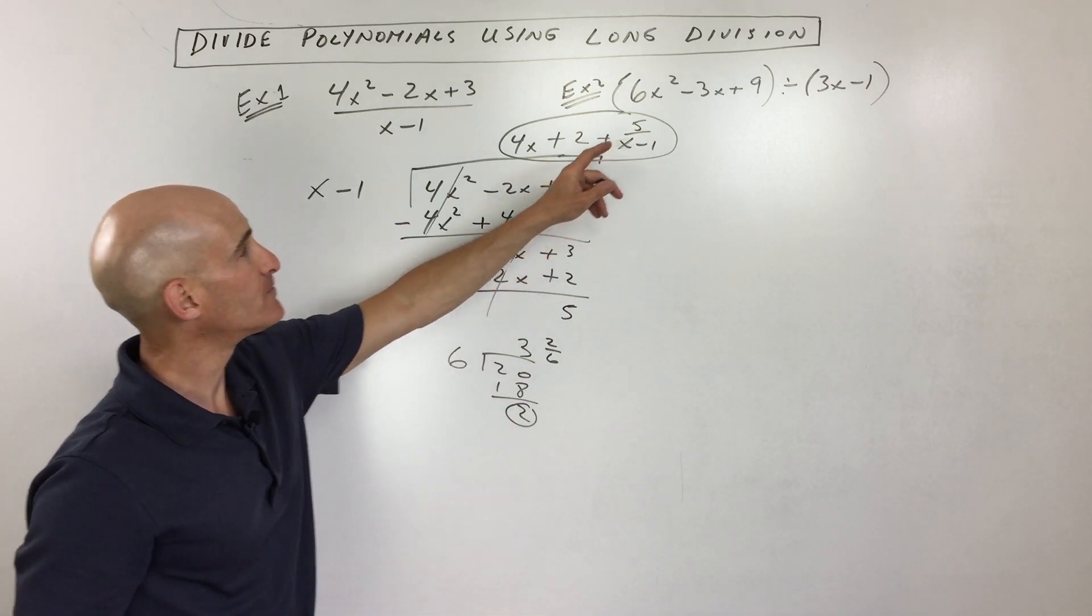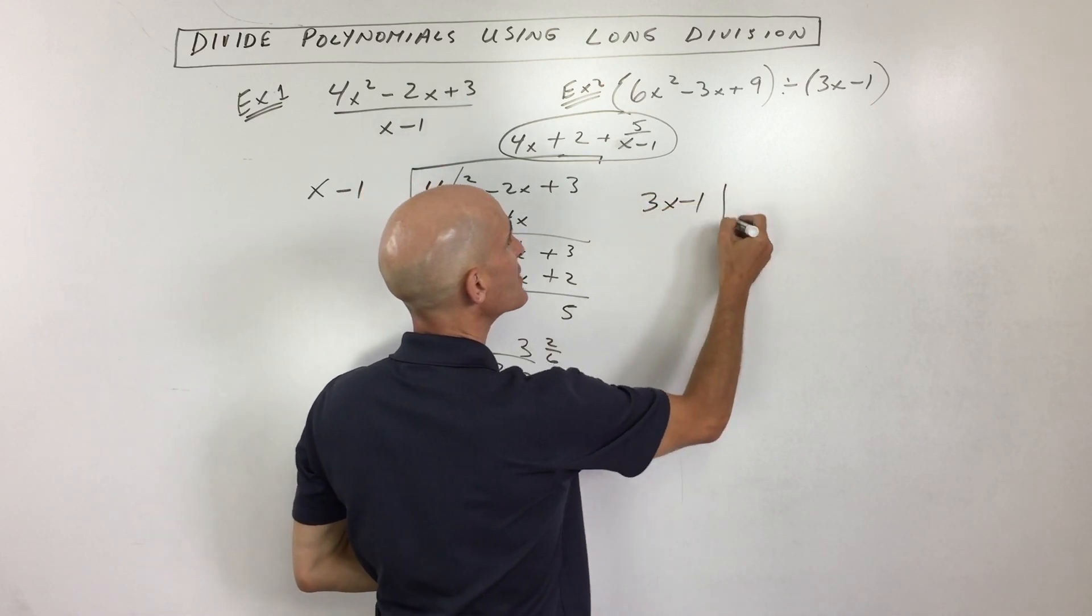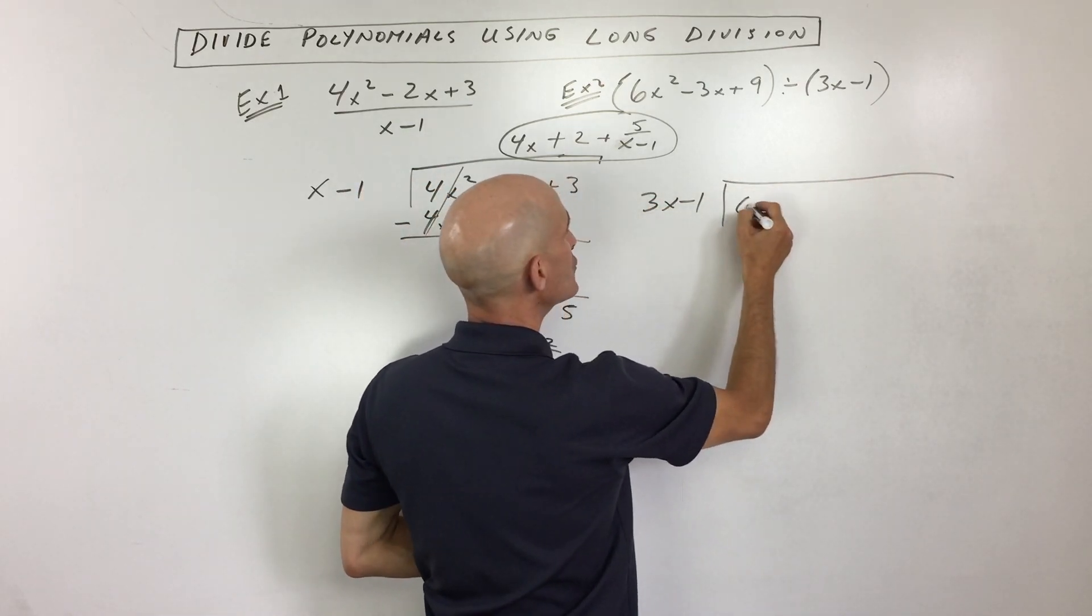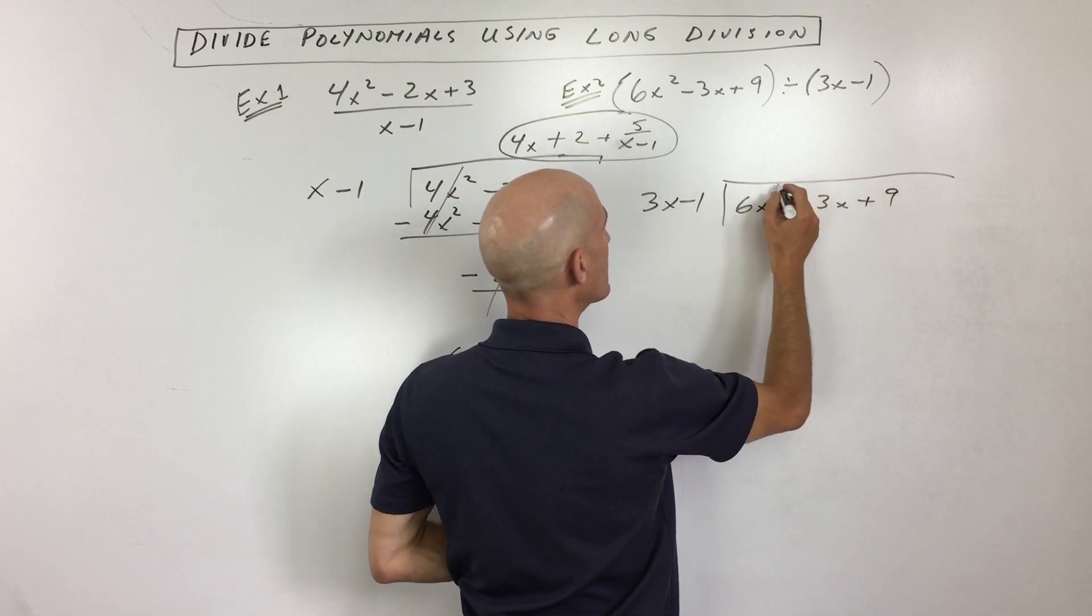Let's go to the second example. Second example, same idea. We have a little bit more challenging though, I should say. We've got 3x minus 1 is going into 6x squared minus 3x plus 9. Okay, so you're with me so far?